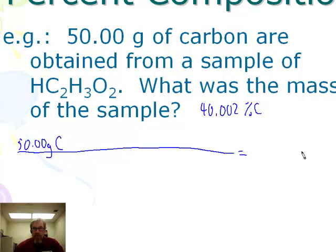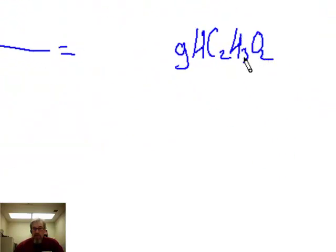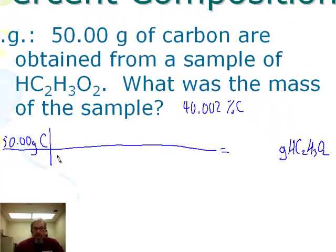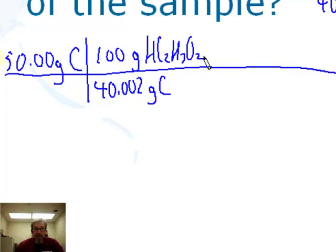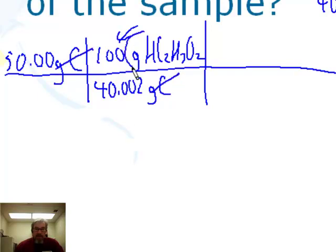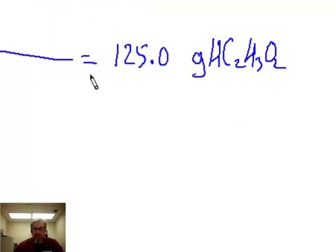Our target is how many grams of the whole sample of HC₂H₃O₂ were present. We know it's 40.002% carbon, meaning there are 40.002 grams of carbon in every 100 grams of the compound. The 100 is an exact number with as many significant figures as the 40.002. Grams of carbon cancel out, leaving grams of acetic acid in the answer. Multiplying and dividing gives 125.0 grams of acetic acid — four significant figures.